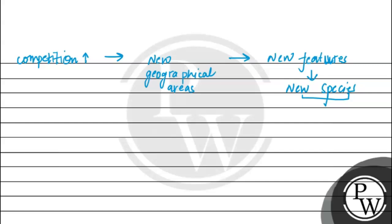There are two other facets of this phenomenon: divergent evolution and convergent evolution. In divergent evolution, different species develop from a common ancestor — different species with different characteristics are formed.